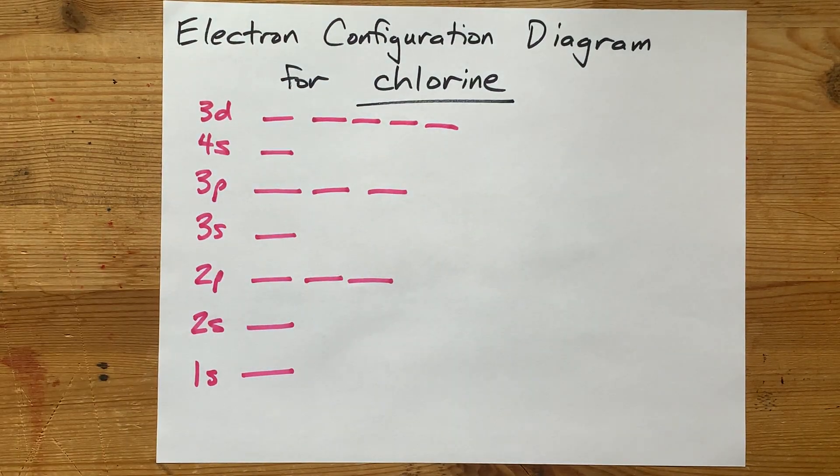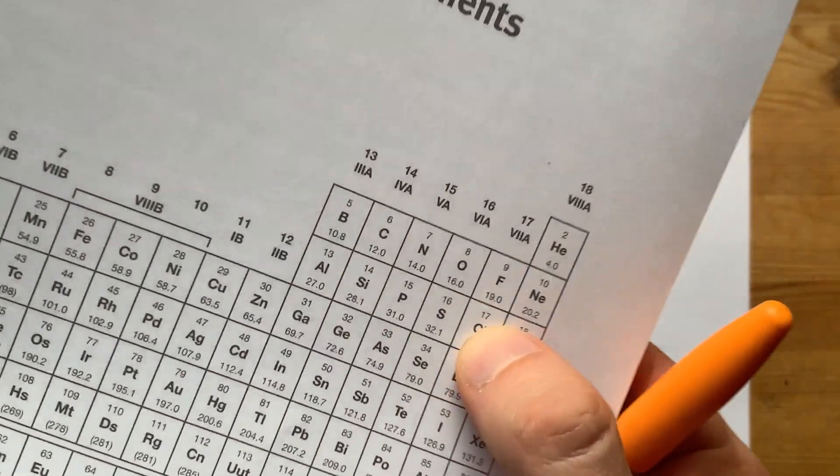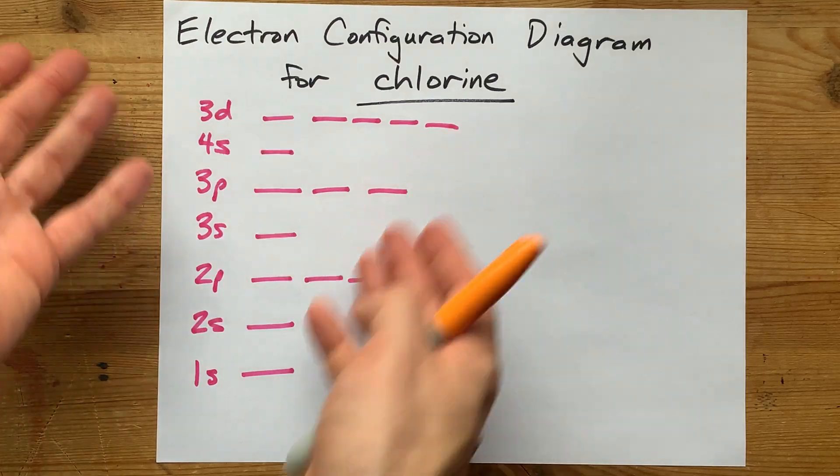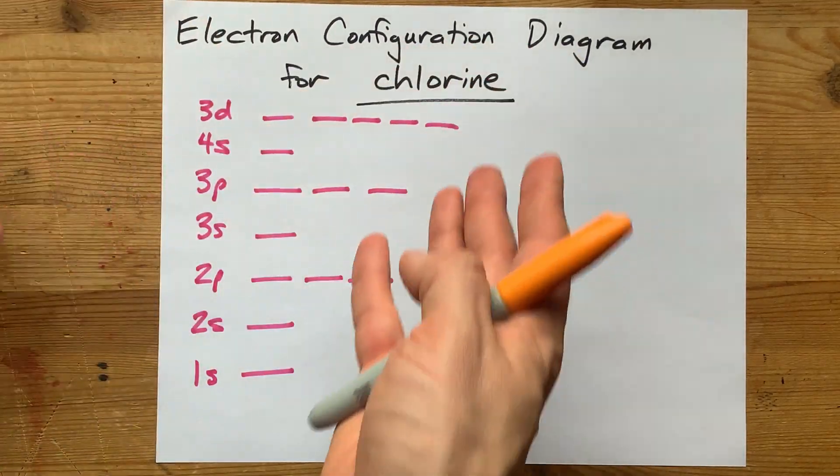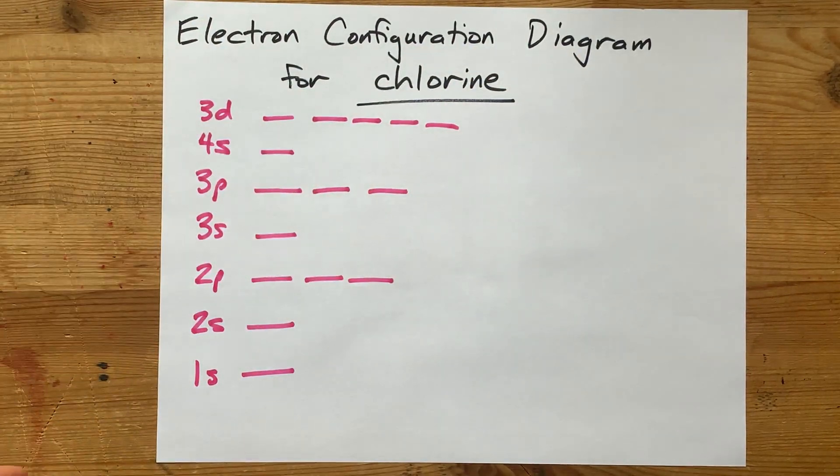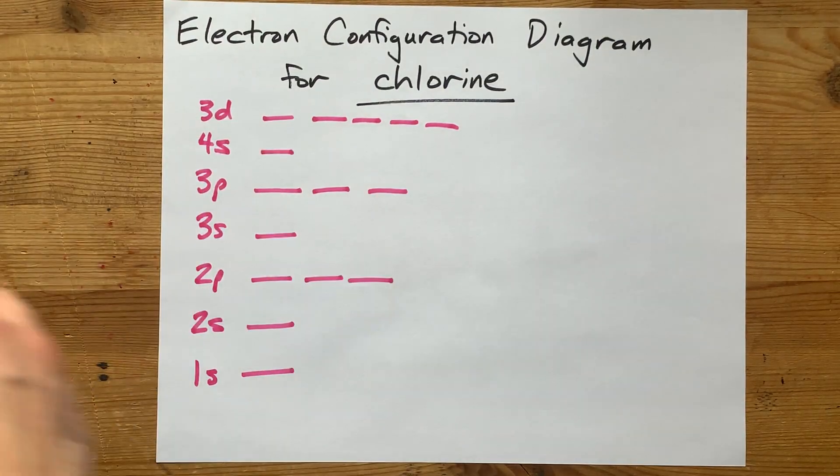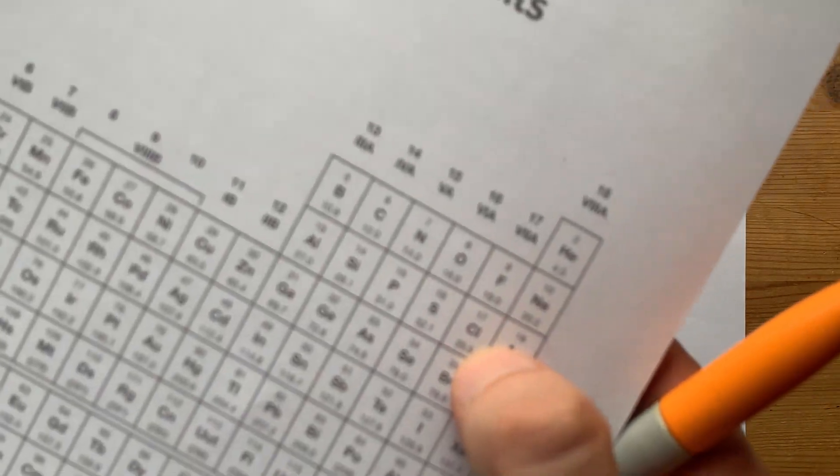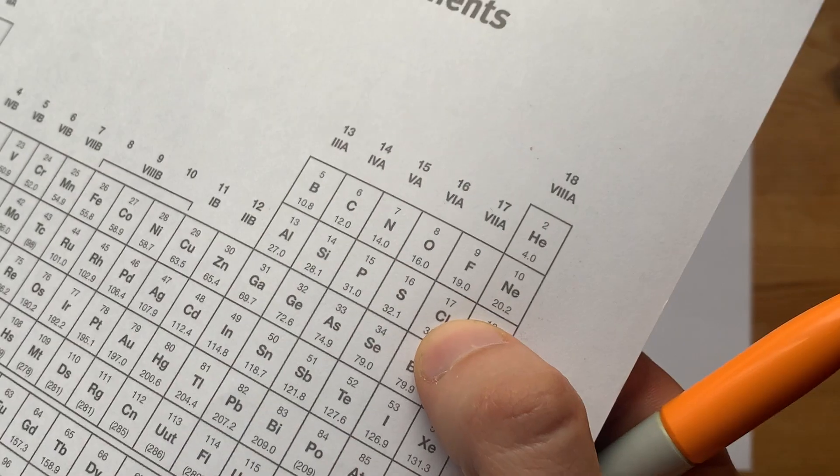But most of those are unoccupied for chlorine. What I mean is chlorine has 17 electrons. What I've drawn here is actually what you start all electron configuration diagrams with, and then your job is to fill it up with however many electrons you're being asked for. In this case, chlorine is 17.